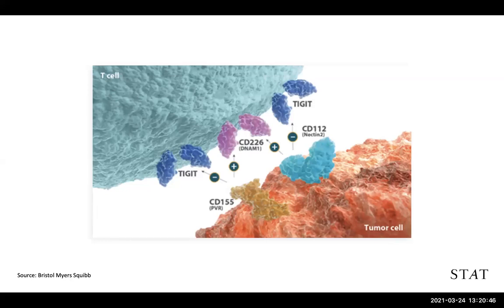In this diagram — this is a slide Bristol Myers has in one of their decks — on the upper left we've got a T-cell, and on the bottom a tumor cell. This graphical representation shows how a TIGIT drug would work. You can see the TIGIT protein on the surface of the T-cell. When the drug comes in and blocks two connections — CD-155 and CD-112 — that activates the T-cells, releasing the brake on T-cells and NK cells. The pressing-on-the-gas part is done through the protein CD-226. That's one reason why people are excited about TIGIT — it has this added activating feature.